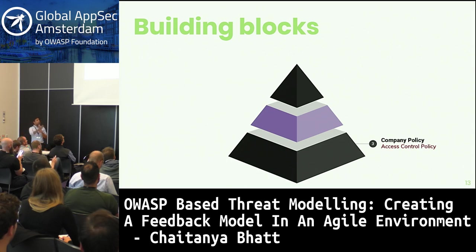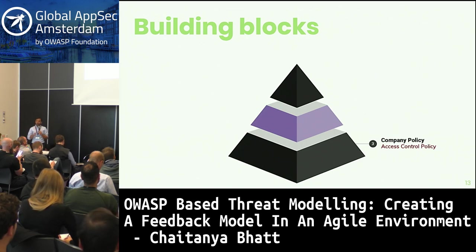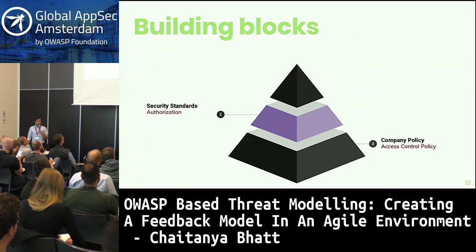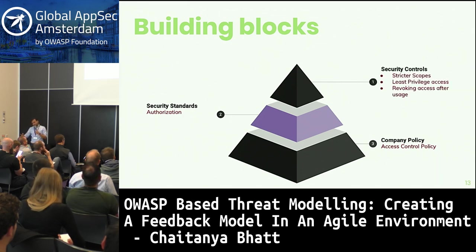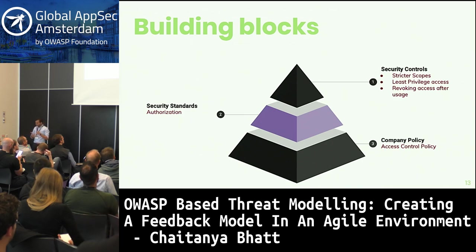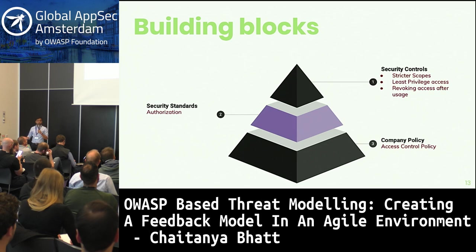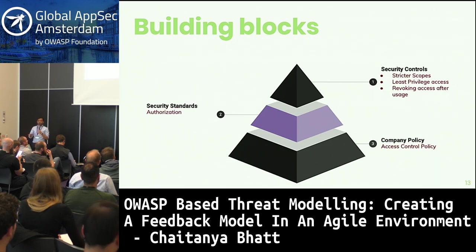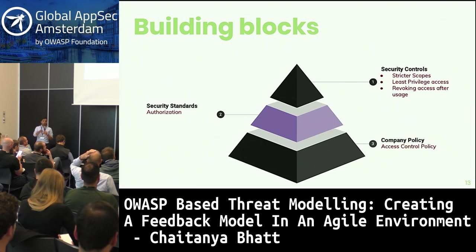To make this more simple, let's take an example. A very common policy that each organization has is an access control policy. To achieve that, a team of security engineers might come up with a standard called Authorization. Now when an application comes for a review, my controls could be strict scopes, least privilege access, and revoking access after usage. These can go more strict if it's a sign-in flow, or a little more liberal if it's a regular back-end service flow — based on how critical or how high the risk an application possesses.